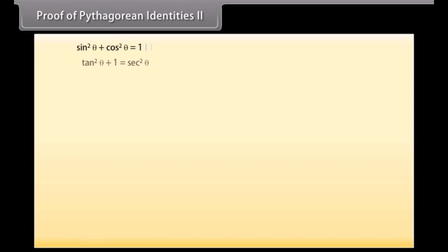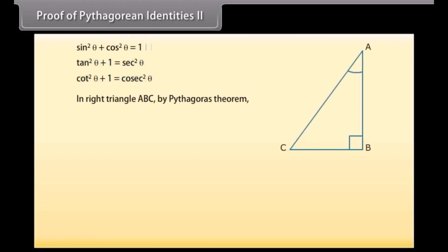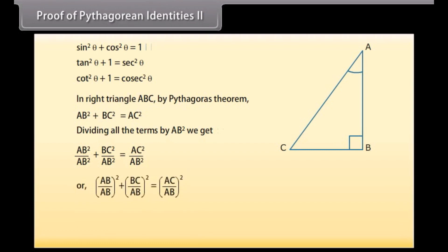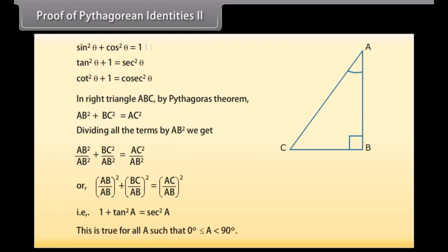Proof of Pythagorean Identity 2: Similarly, in right triangle ABC, by Pythagoras theorem AB squared plus BC squared is equal to AC squared. Dividing all terms by AB squared, we can write AB over AB squared plus BC over AB squared equals AC over AB squared. That is 1 plus tan squared A is equal to sec squared A. This is true for all A such that 0° ≤ A < 90°.